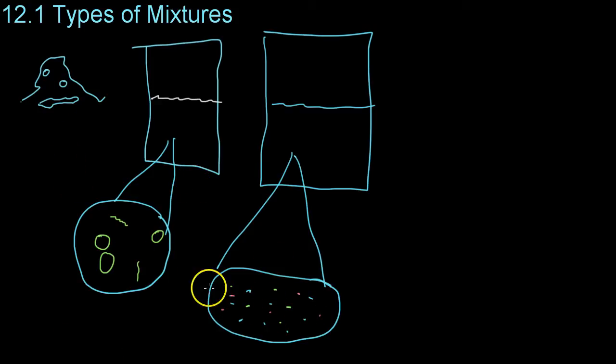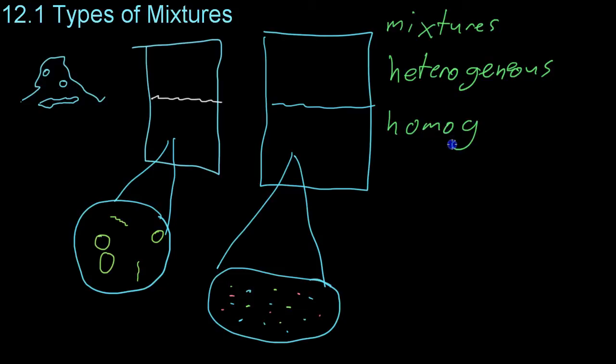Now, these types of mixtures all have different names, and we're going to be discussing those within this video. For the most part, mixtures can be categorized into two different varieties: heterogeneous mixtures and homogeneous mixtures.